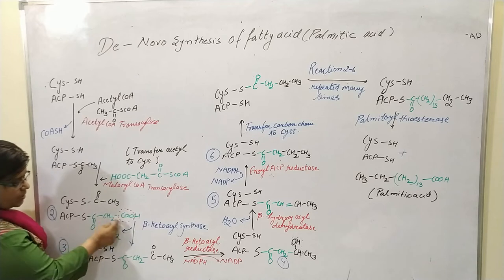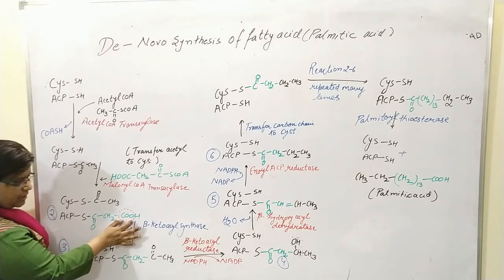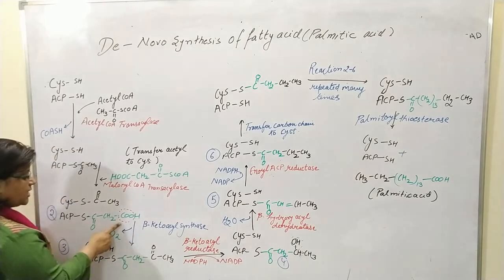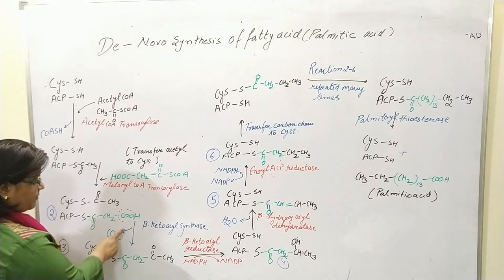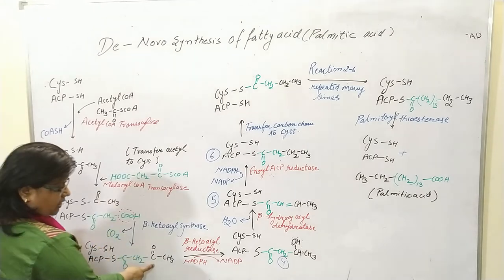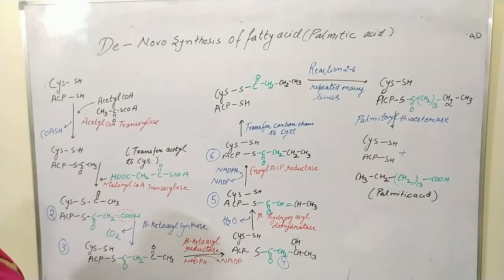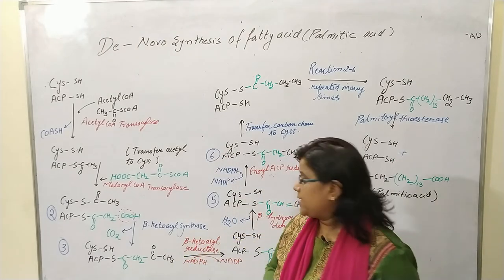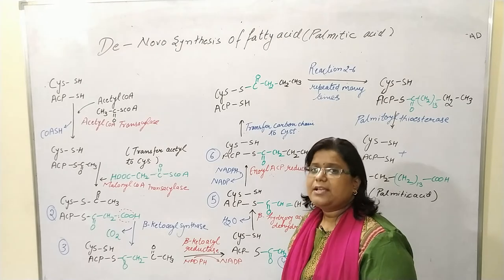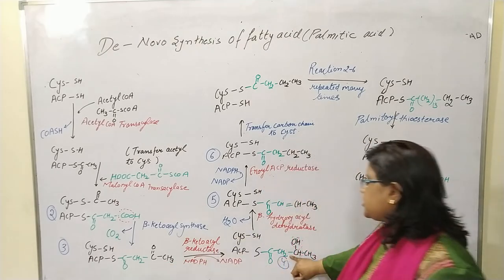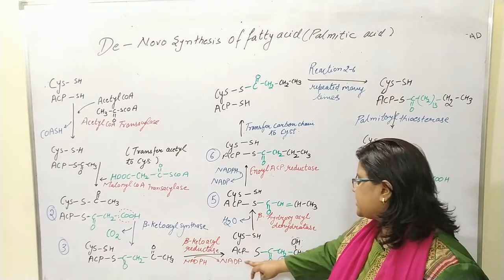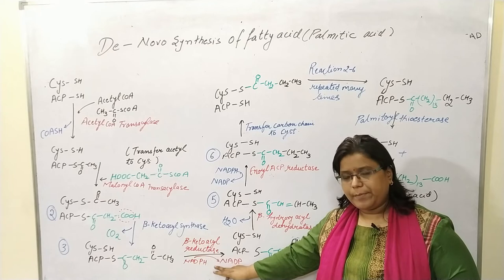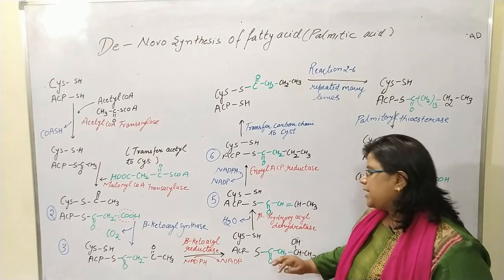In the third reaction, the CO₂ present in the malonyl group is released by beta-ketoacyl synthase, forming a keto group on the beta carbon position — hence the name beta-ketoacyl synthase. In the fourth reaction, reduction of the beta-keto group takes place via beta-ketoacyl reductase: the ketone group is reduced to a hydroxyl group, and NADPH donates the hydrogen, being converted to NADP⁺.